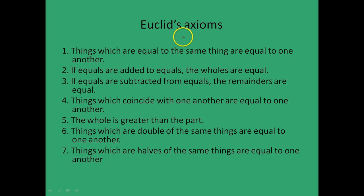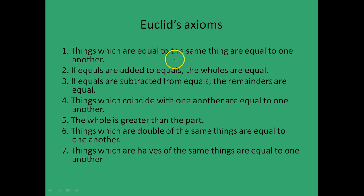Euclid also gave axioms in his treatise which are very useful and self-evident. The first states: things which are equal to the same thing are equal to one another. That is to say, if A equals C and B equals C, this implies A is equal to B.